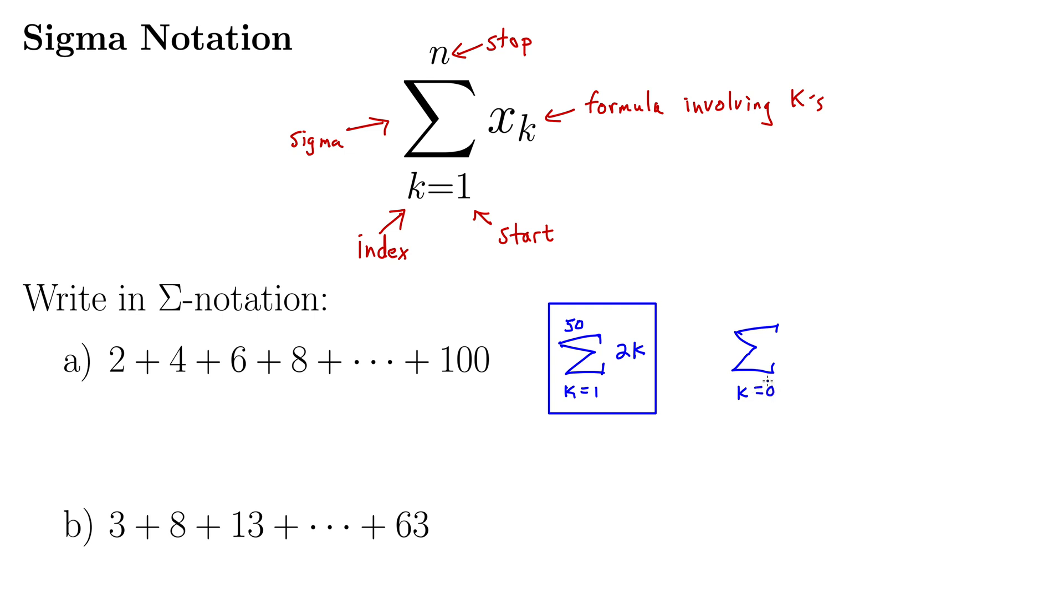Well then, if I just did 2k, the first term would be 0. So I guess that would work, but we could also do this. What if we did 2k plus 2, and then we stopped it at 49? Do you agree that this would give us the exact same sum?